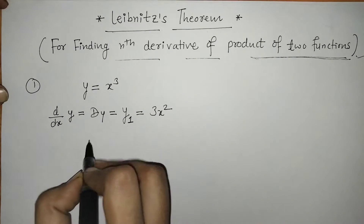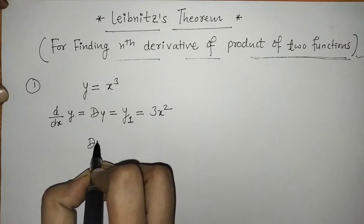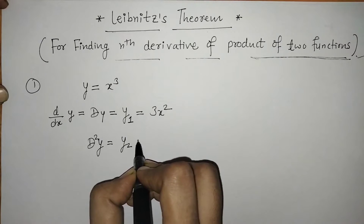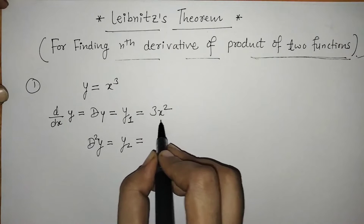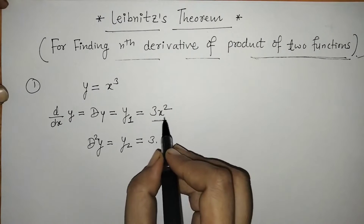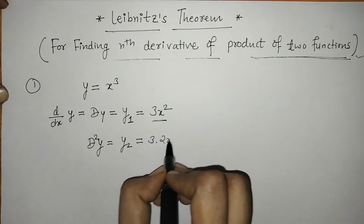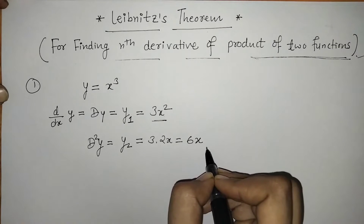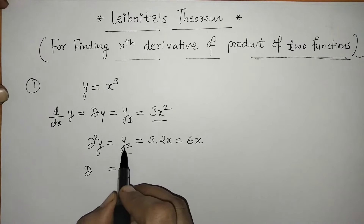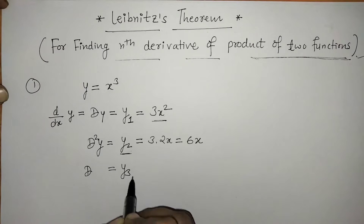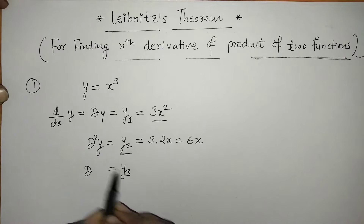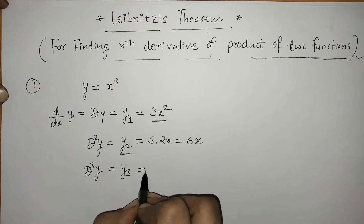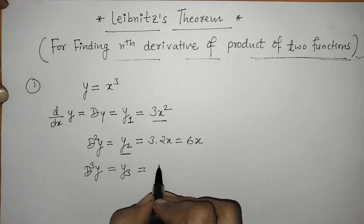Similarly, if we differentiate y1 we get the second derivative, which we call y2. The derivative of 3 is constant, and the derivative of x squared is 2x, so we get the second derivative as 6x. Again if we differentiate y2 we get y3, meaning we are differentiating y three times, so y3 equals 6.